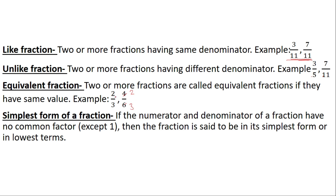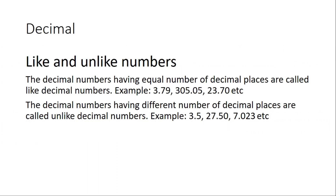If we change 4 by 6 to its simplest form, it will be the same as 2 by 3 — that is known as an equivalent fraction. Simplest form: if the numerator and denominator of a fraction have no common factor except 1, the fraction is said to be in its simplest form, or lowest form. Here, 4 by 6 is changed to simplest form — there is no common factor other than 1.